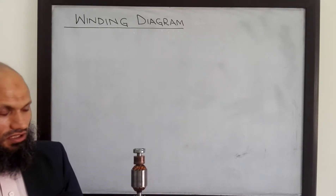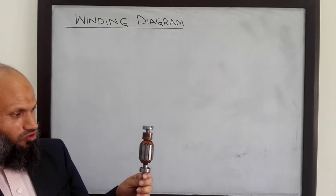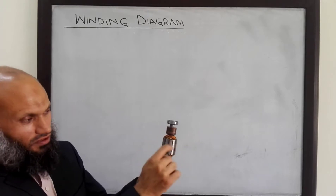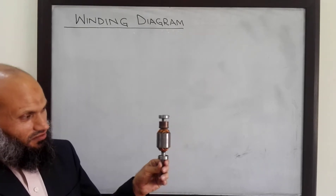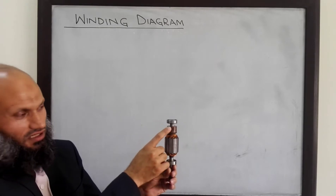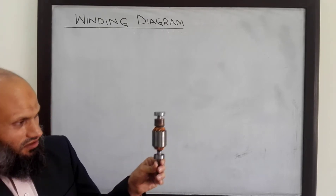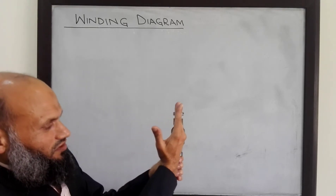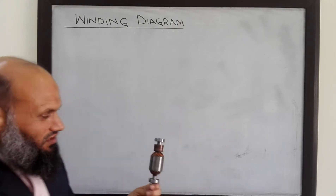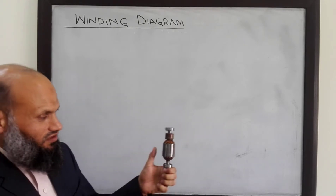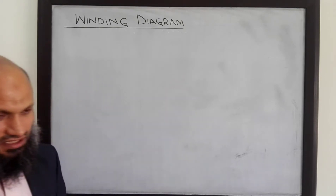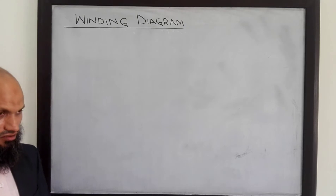Here is a rotor of a small DC machine. Inside the rotor we have coils placed and we have commutator segments. The ends of the coils are connected to these commutator segments. Each coil is shorted at the back end. So if I cut it from here and make it flat, then all the coils placed inside the rotor will be visible. If I show that in a diagram, that diagram is called the winding diagram.